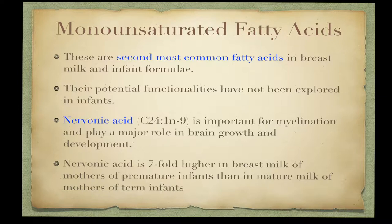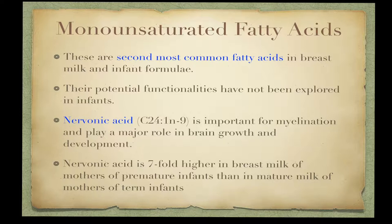One other monounsaturated fatty acid is nervonic acid. Although found only at extremely low levels in breast milk and infant formula, the 24-carbon nervonic acid is important for myelination and plays a role in brain growth and development. Nervonic acid is the major extremely long chain fatty acid in sphingomyelin, with dramatic accretion around the time of delivery. It has been observed that nervonic acid is seven-fold higher in breast milk of mothers of premature infants than in mature milk of mothers of term infants.